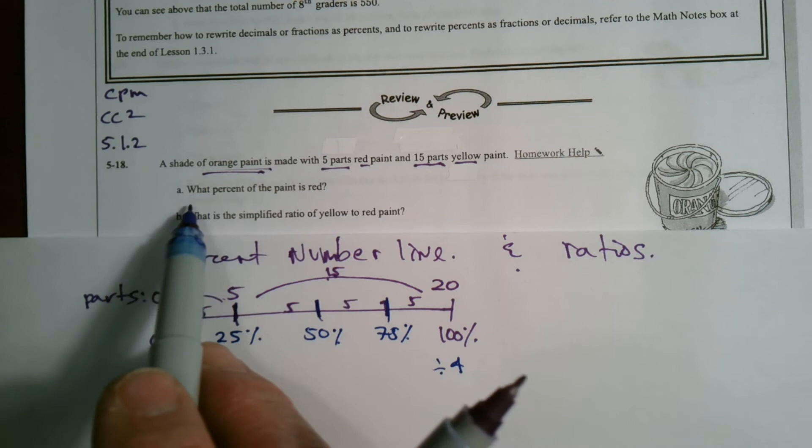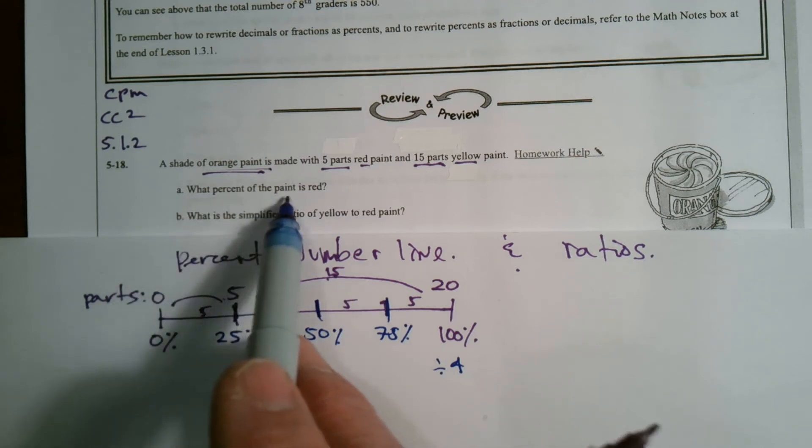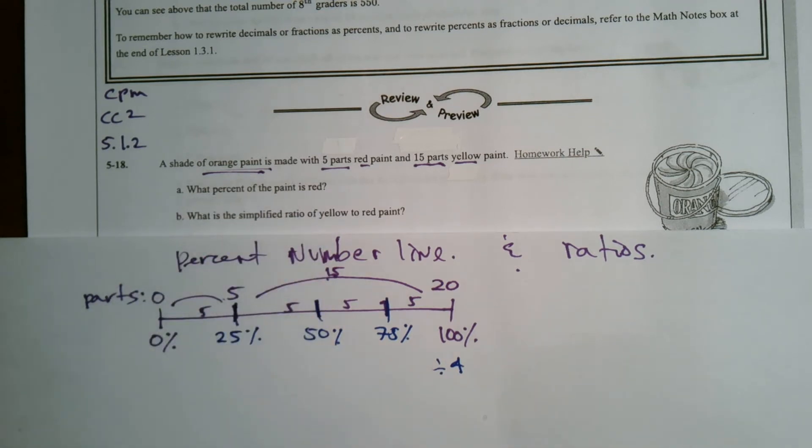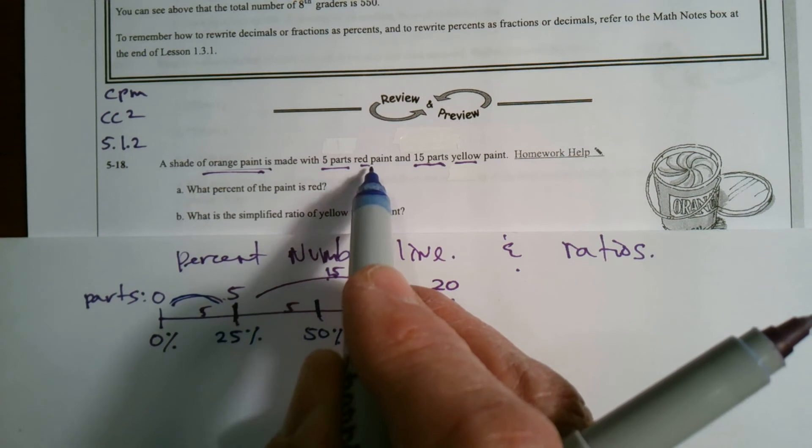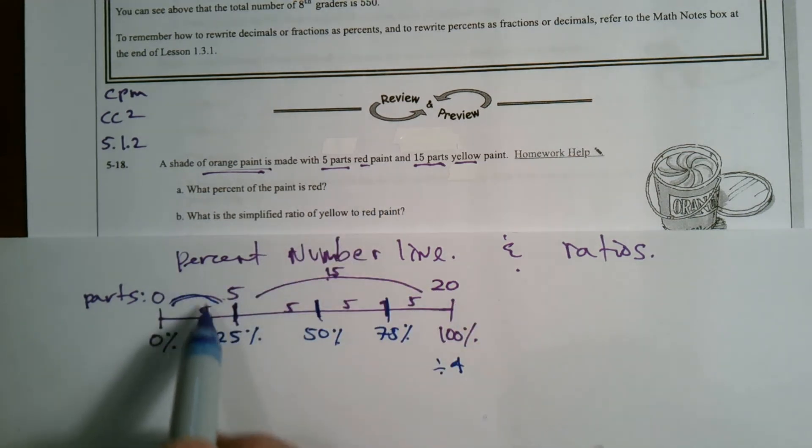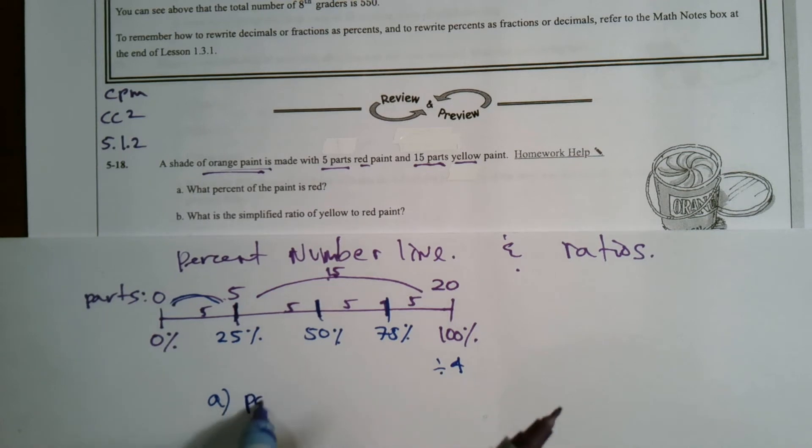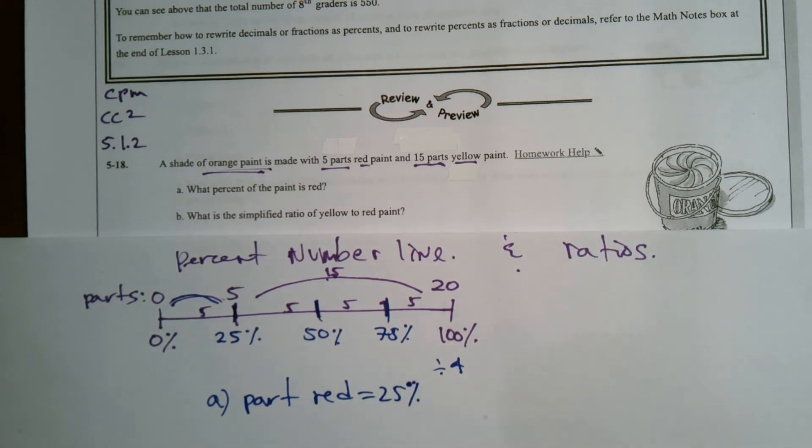So I have my percent number line shows me what I have. Now, let's go back to the question. It asks, what percent of paint is red? So what percent of paint is red? Well, there's five parts red. So that percent is 25 percent. So there's my answer for A using the number line. Parts red equals 25 percent.